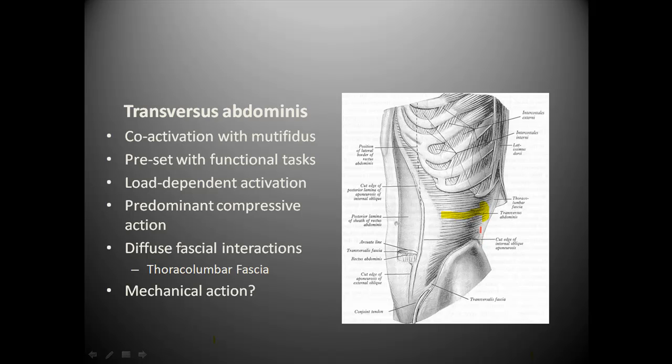The line of pull will basically tension the thoracolumbar fascia so that it pulls in this direction. The effect of that is to bring these two zones closer together. We'll look at the biomechanics in a little more detail shortly, but that is one of the mechanical effects of muscle contraction of the anterolateral abdominal wall. The other concept to remember is the so-called oblique sling system, which Diane Lee and Andry Vleeming did a lot of work on.